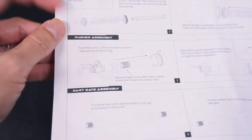This guide mainly comprises of 4 assemblies. Let's start off with the plunger assembly.